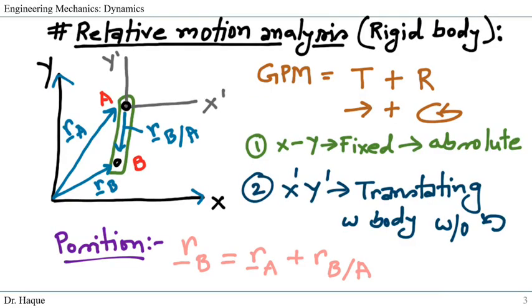So let us assume that the body in the picture AB is experiencing general plane motion meaning it has translation and rotation at the same time. We can observe the translation and rotation separately if we use relative motion analysis. For relative motion analysis we need two coordinate systems. First one is the xy which is fixed and it will give us absolute motion of any point on body AB. The second coordinate system is the x prime y prime that is translating with the body AB and it doesn't have any rotation.